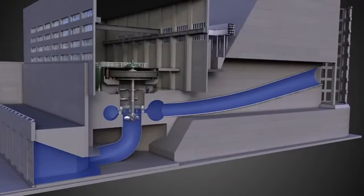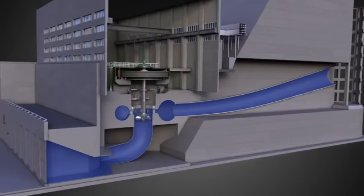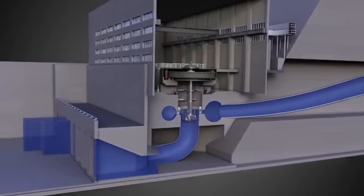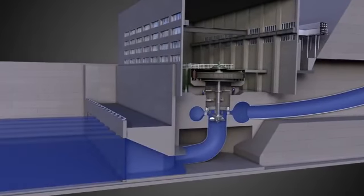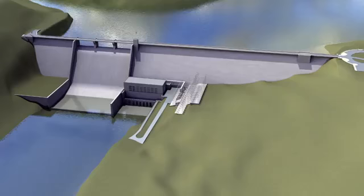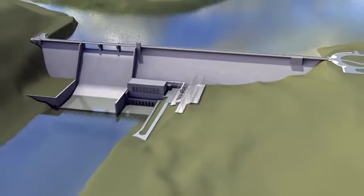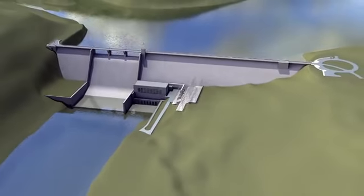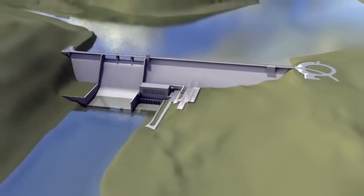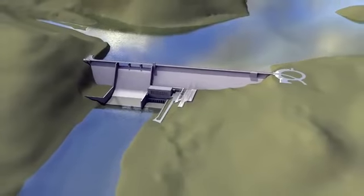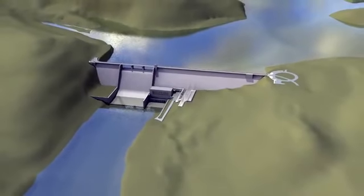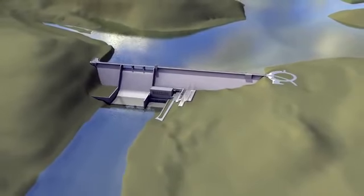After flowing through the penstock and across the turbine, the water continues into the river on the other side of the dam. Hydroelectric power is a renewable source of energy. It's also one of the most cost-reliable forms of electric production.